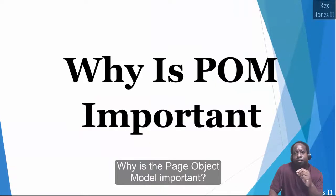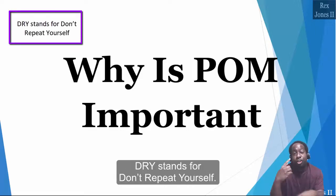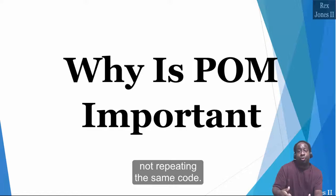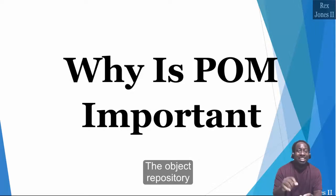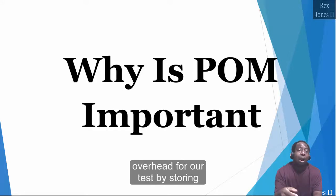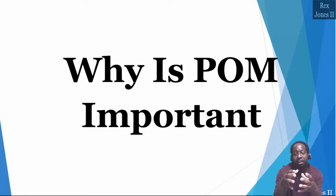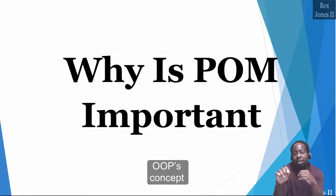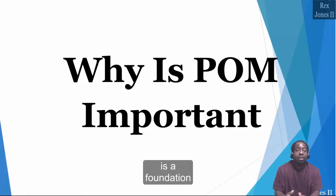The page object model is important because it helps with the DRY principle — Don't Repeat Yourself. This principle provides support by not repeating the same code. We store each field and method in an object repository, which is designed to reduce overhead for our tests by storing properties and actions in one location. If you notice you are writing the same code over and over, then that code is a candidate for the DRY principle. The DRY principle falls under the OOP concept, which stands for Object Oriented Programming — the foundation for page object model.